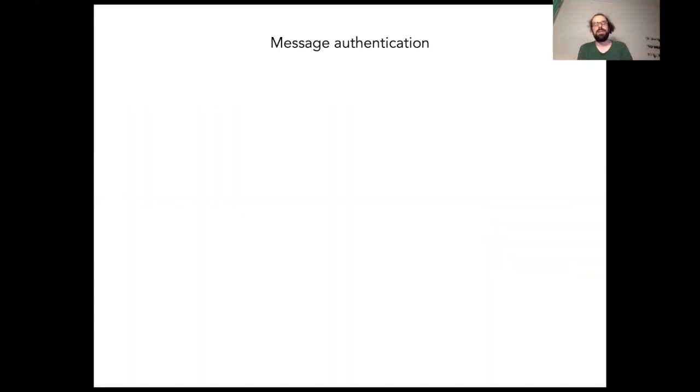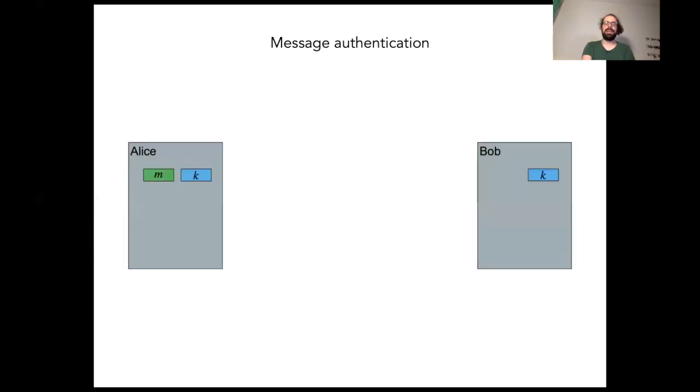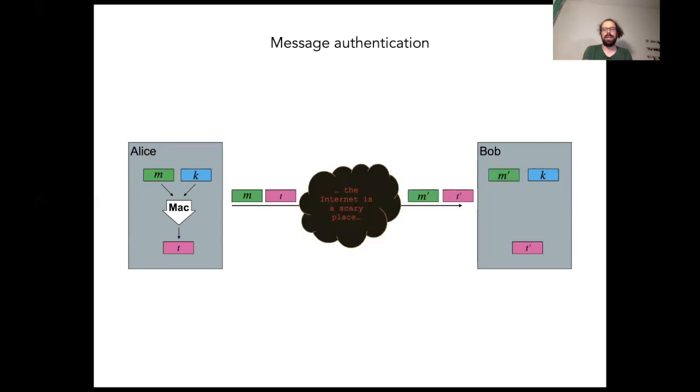How does the message authentication code work? Let's assume Alice wants to send a message to Bob and authenticate it. She shares a secret key K with Bob. She begins by computing the MAC tag using the MAC function, her secret key, and the message. Then she sends the message together with the tag to Bob.